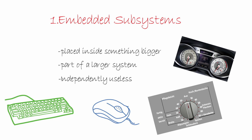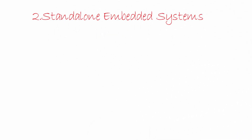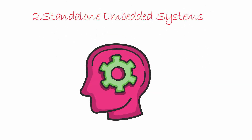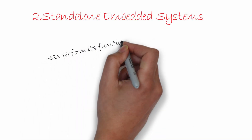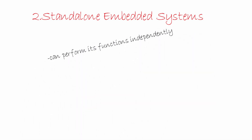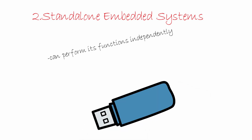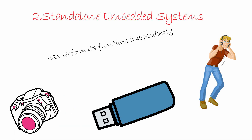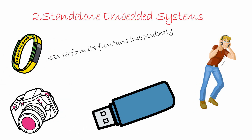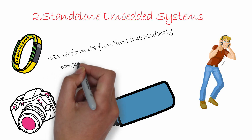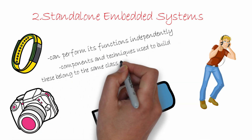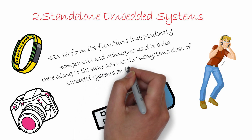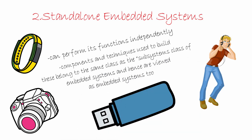Next, let's look at another class called standalone embedded systems. These are devices that can perform their function independently, as the name suggests. Examples include USB drives, which are used to store data; MP3 players, which can play music; digital cameras, which can take pictures; and digital watches, which tell us the time. Although they are not embedded into something bigger, the components and techniques used to build these systems belong to the same class as subsystems and hence are viewed as embedded systems too.